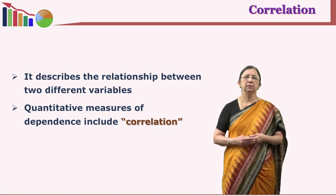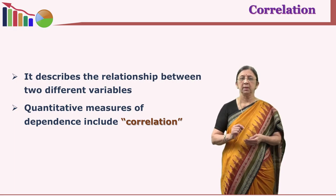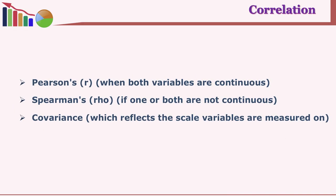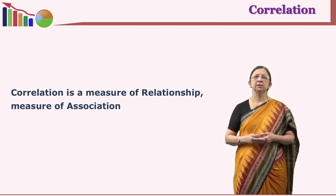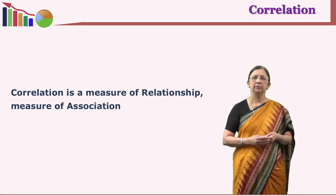When we are interested in finding out the relationship between two variables, we use the coefficient of correlation. The word 'correlation' means relationship or association — it does not say that it is a causal relationship. In this session, we will see a variety of coefficients like Pearson's r and Spearman's rho, and we will also see scatter plots and covariance.